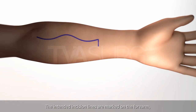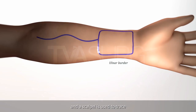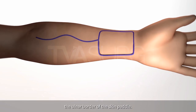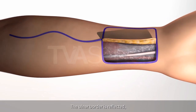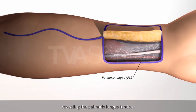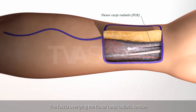The intended incision lines are marked on the forearm, and a scalpel is used to trace the ulnar border of the skin paddle. The ulnar border is reflected, revealing the palmaris longus tendon. The fascia overlying the flexor carpi radialis tendon is divided.